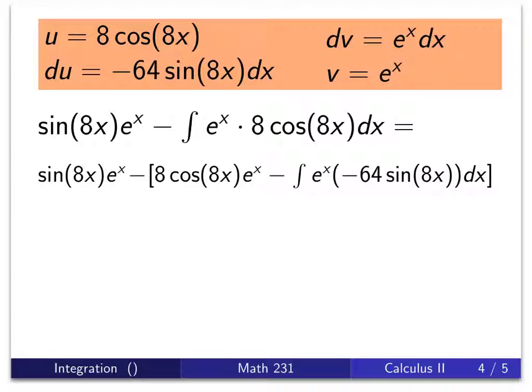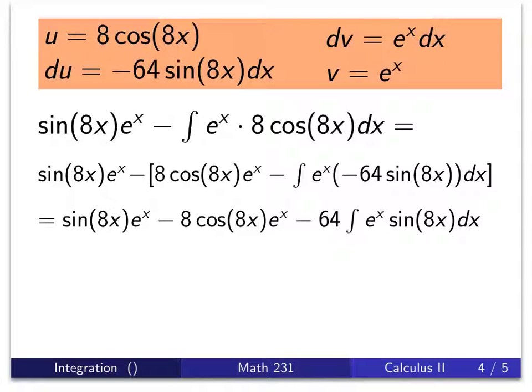Now with a little simplification, distribute the negative through. Factor the 64 out. We end up with this equation. Now it might seem like we're spinning our wheels because we've kind of gotten back to where we started, haven't we? Actually, that's a good thing.